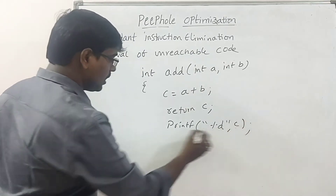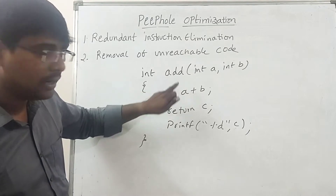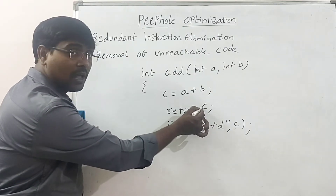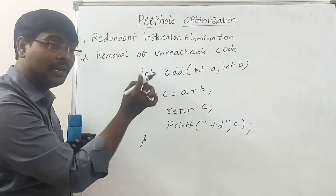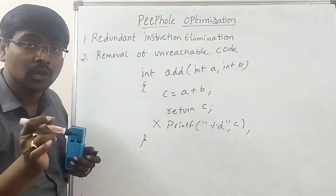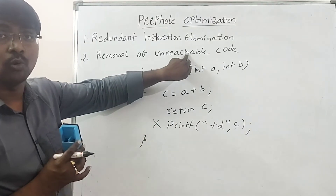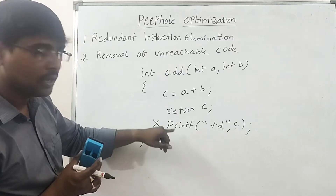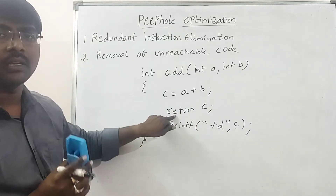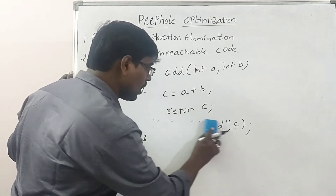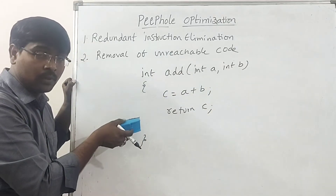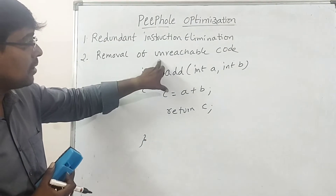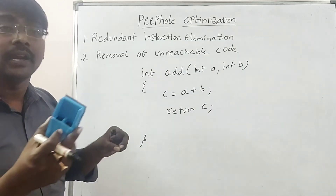After the return statement there is a printf to print the value of C. When you call the function add, it takes two parameters, performs the addition, and returns the value. Whenever a function returns, control moves to the calling function immediately — so the printf statement after the return is never executed. This is called unreachable code. Any statement written after the return is never executed, so we simply remove it. This removal is called optimized code, also known as dead code elimination.